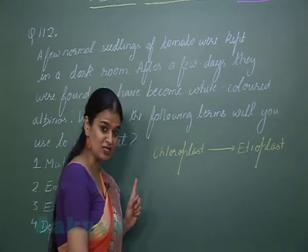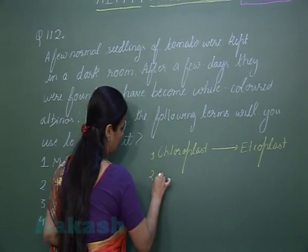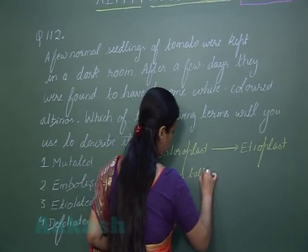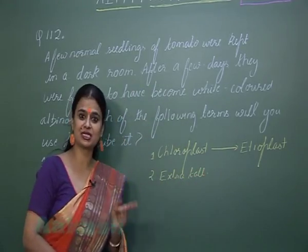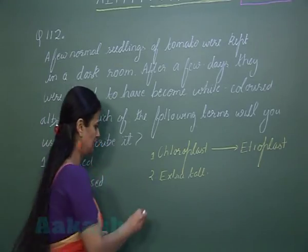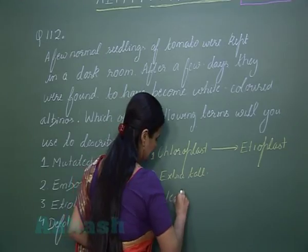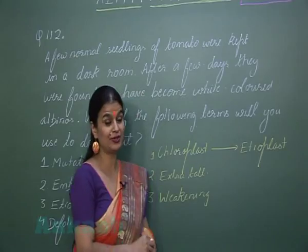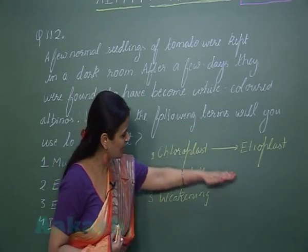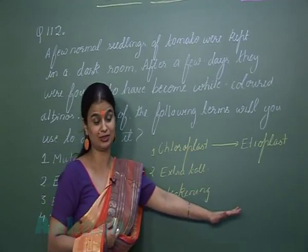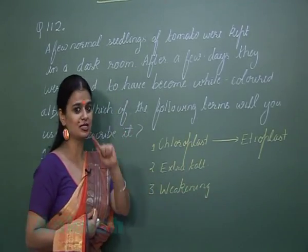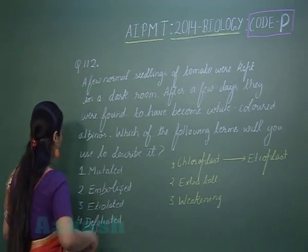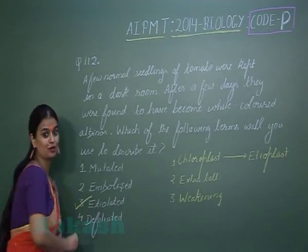The next feature is that the seedling will grow extra tall — elongation of stem and leaves will occur, and along with that, weakening of stem and leaves is also present. In the absence of light, all these conditions are associated with the seedling, and such a seedling is called an etiolated seedling. The right option for this question is option number 3.